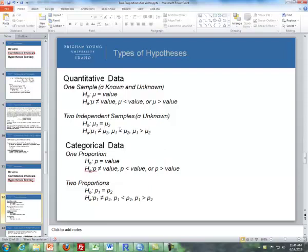First of all, going back to Unit 2, when we dealt with one sample where the standard deviation was known or unknown, we said the null hypothesis was that mu was equal to a value. And the alternative could be a two-sided test or a one-sided test, either less than or greater than.